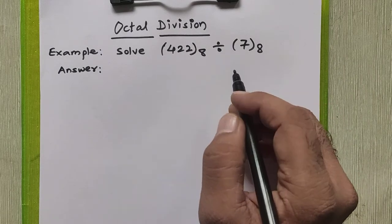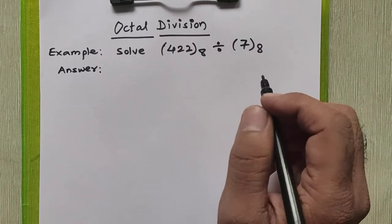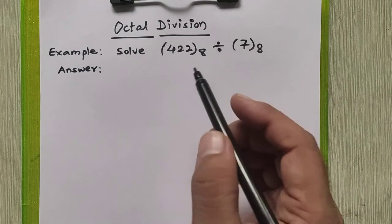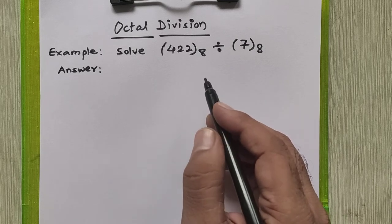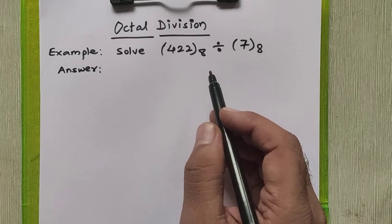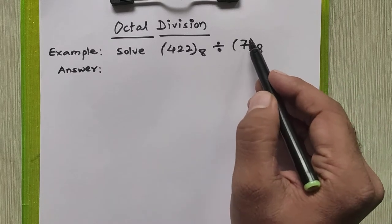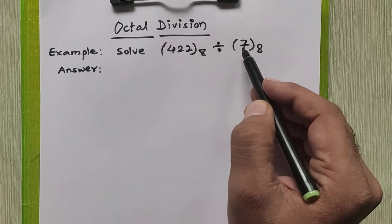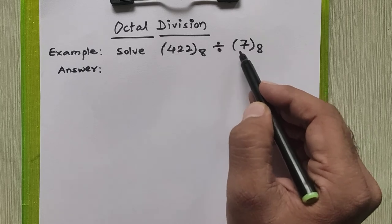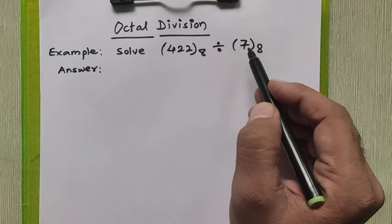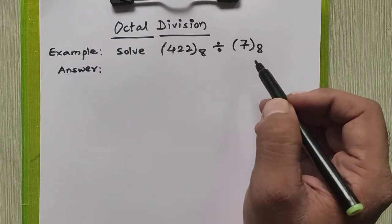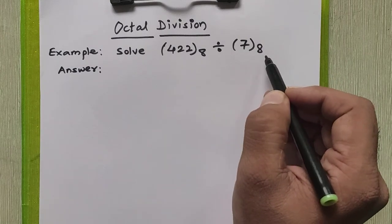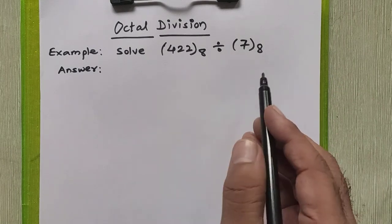Now in octal number system, as we know, the valid digits are only 0 to 7. It means this number 7 will generate a table for this number 7 to divide this number. It means we should know the table for this number in octal number system, so we'll first generate the table of 7 in octal.